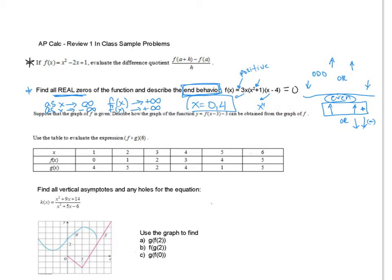Next question: suppose the graph of f is given — describe the graph of the function y equals f of x minus 3, minus 3. This can be obtained from the graph of f by a transformation. In this case we are shifting to the right three units, and then this next part tells us down three units. That is the transformation happening on this graph.